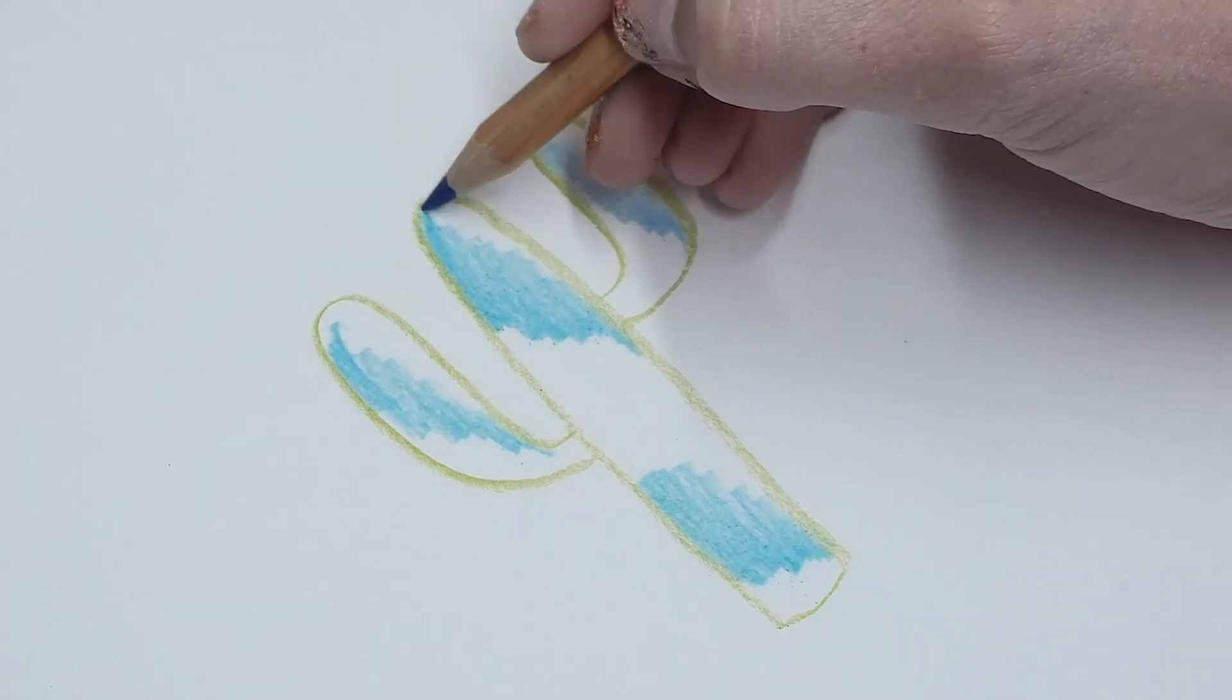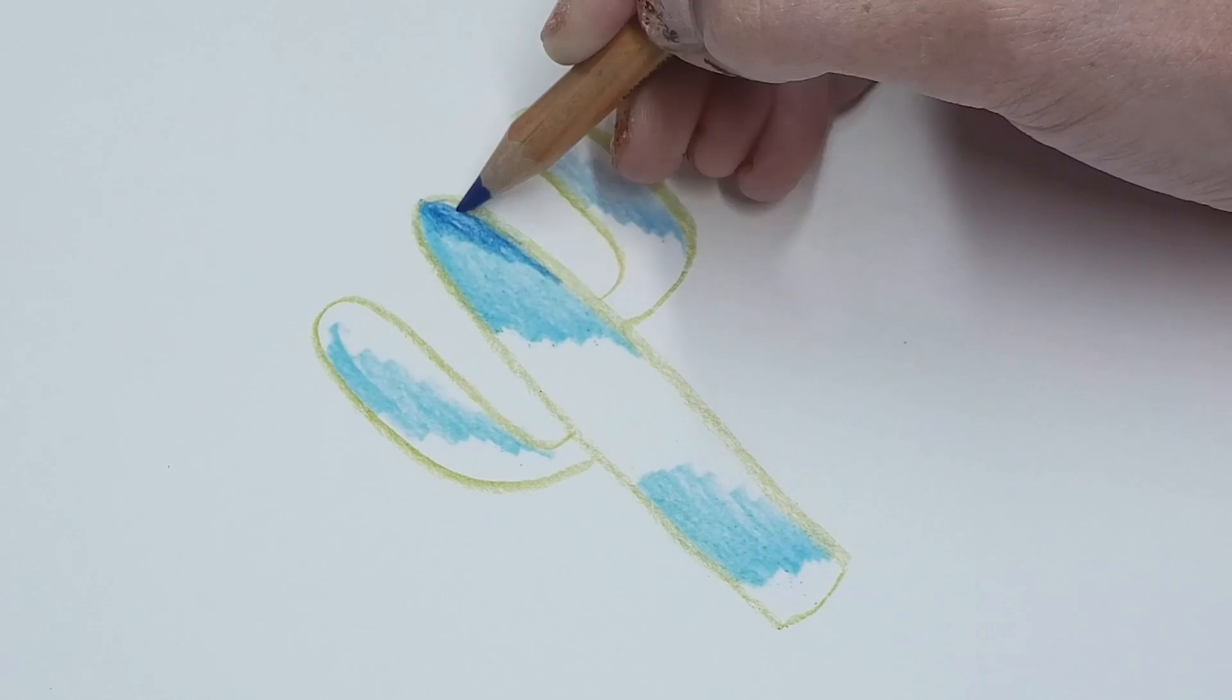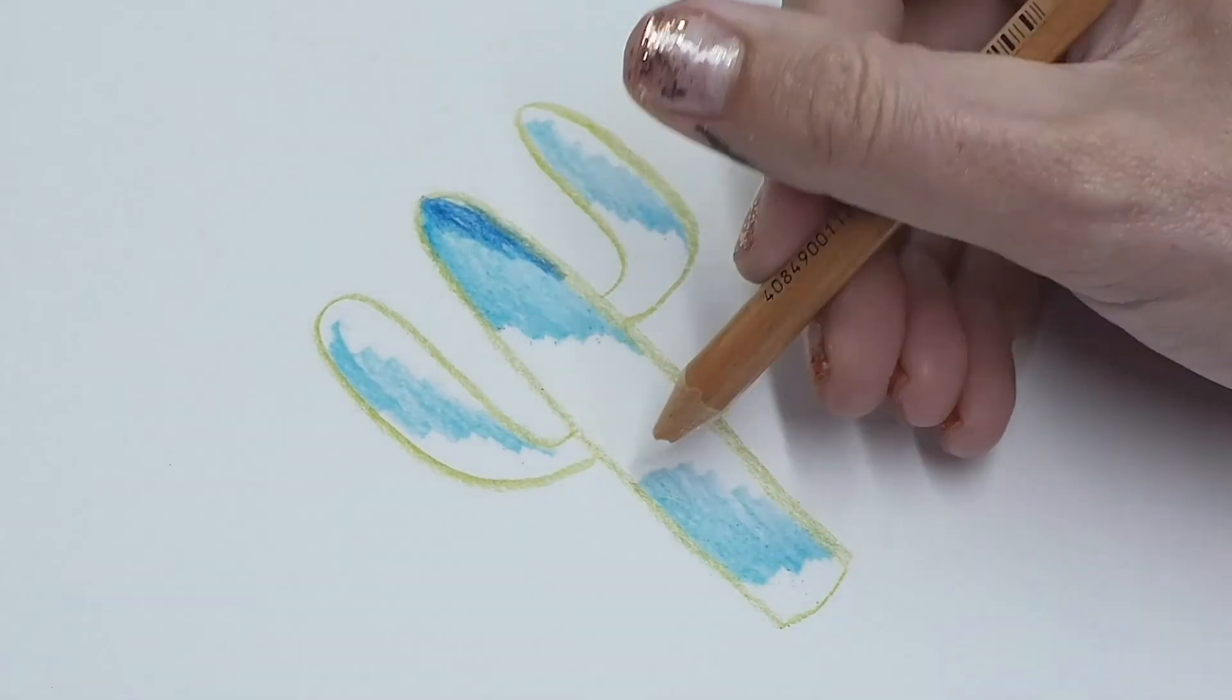Then you're gonna take your dark blue and add it to the top of the light blue. As you can see here, I overlap it just a little bit because I want the blending to be perfect.